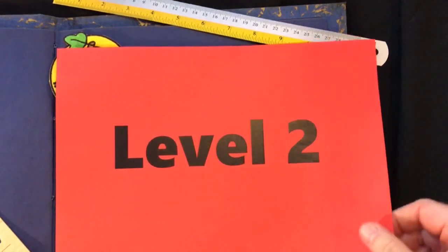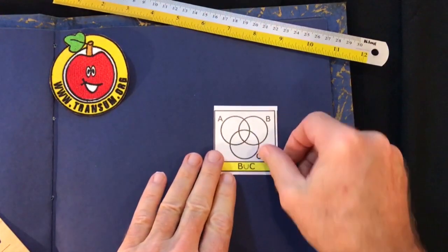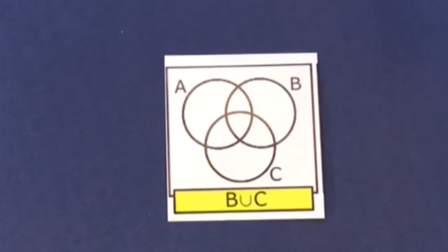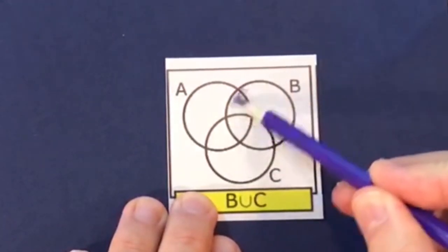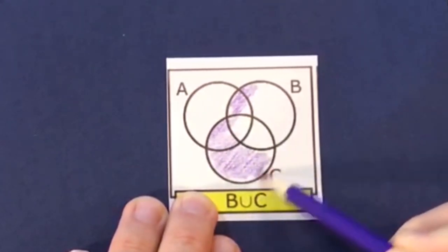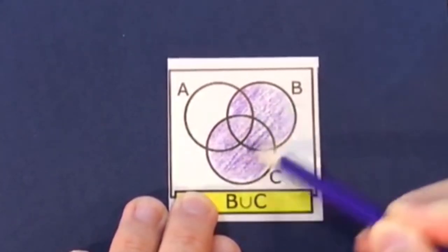Now let's look at level two of the online exercise. Here we have three sets represented in a Venn diagram within the universal set. You shouldn't be put off by three sets — it's the same principle as before. For example, B union C means both B and C are coloured in — everything in B and C.